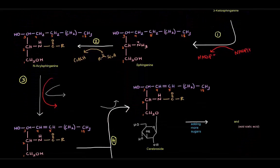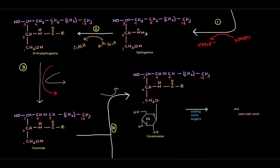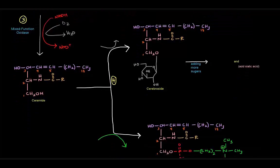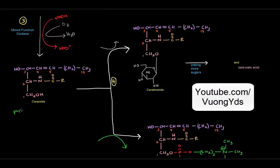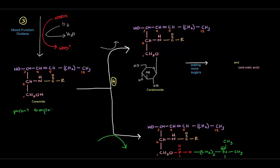Step three is going to be importing the desaturation between carbons four and five. So right here, there's a single bond that we're starting off with. We need that to be a double bond. The enzyme that's going to accomplish that is called a mixed-function oxidase, which we've mentioned a couple times before. That requires NADH as well as molecular oxygen. And that will give us ceramide, which is the parent compound of sphingolipids.